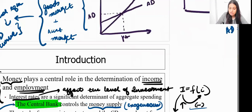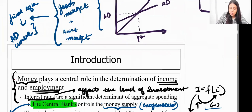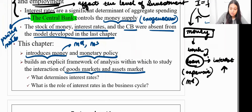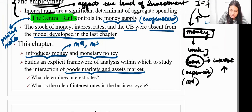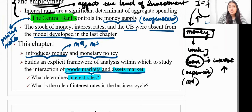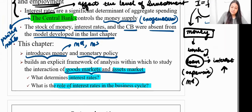My final aim is to reach that AD curve in P-Y space, and I'm going to do this in multiple steps. So this is the introduction: I want to understand what is the goods market, what is the asset market, how to determine the equilibrium interest rate, and how interest rate affects the business cycle.